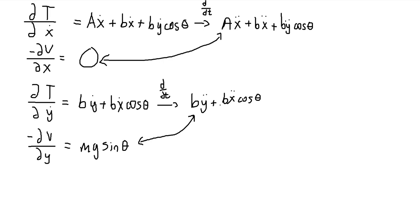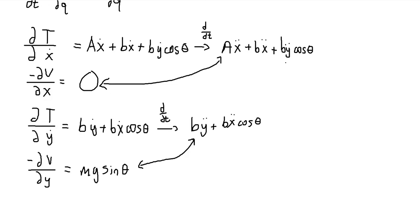So now we just want to solve for Y double dot by itself. And again, that's very nice with this being equal to zero.